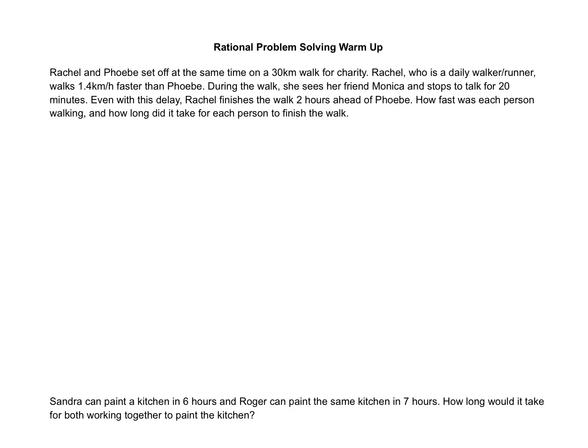In this video, we will be looking at some rational word problems. Rachel and Phoebe set off at the same time on a 30-kilometer walk for charity. Rachel, who is a daily walker/runner, walks 1.4 kilometers per hour faster than Phoebe. During the walk, she sees her friend Monica and stops to talk for 20 minutes. Even with this delay, Rachel finishes the walk two hours ahead of Phoebe. How fast was each person walking, and how long did it take for each person to finish the walk?